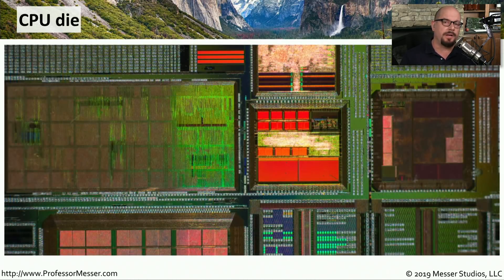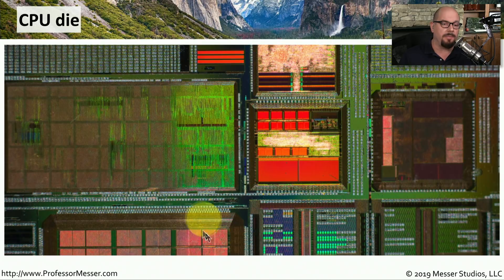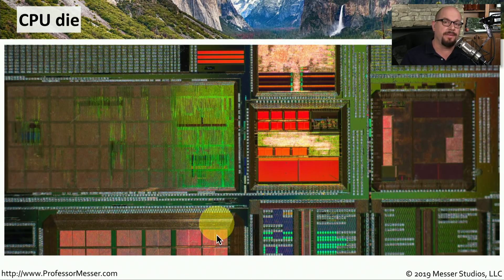If you were to look very closely at the die of a CPU, you can almost pick out the individual cores, or you may be able to see where cache memory might be stored on the CPU itself. If you're interested in seeing more of these CPU dies, you could perform a Google search for this, or go to Intel or AMD's websites to find the CPU die for your particular processor.